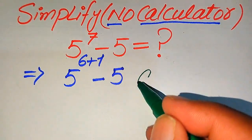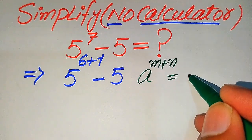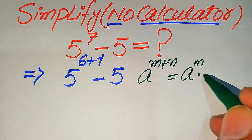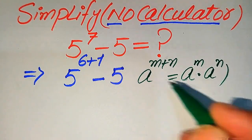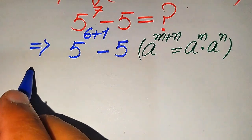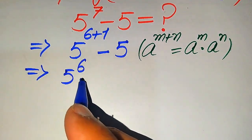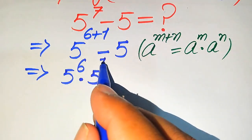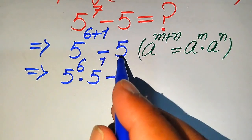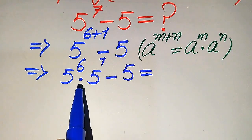The exponential law states that a to the power of m plus n equals a to the power of m multiplied by a to the power of n. Applying this rule to the first term, it becomes 5 to the power of 6, multiplied by 5 to the power of 1, minus 5.